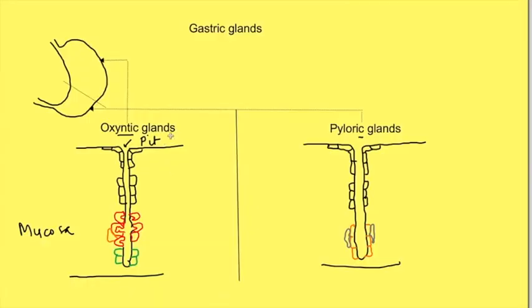We have seen in some other video the glands present in gastric mucosa - that is, oxyntic glands and pyloric glands - and the cells lining these glands. Now in this video we will discuss parietal cells and how these cells secrete HCl.